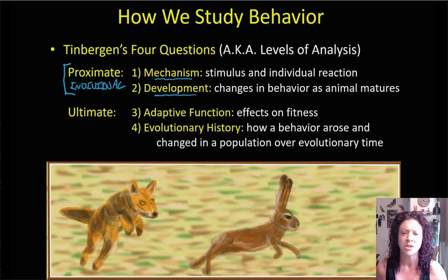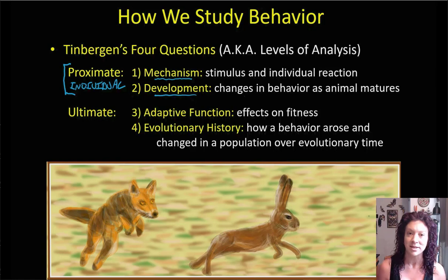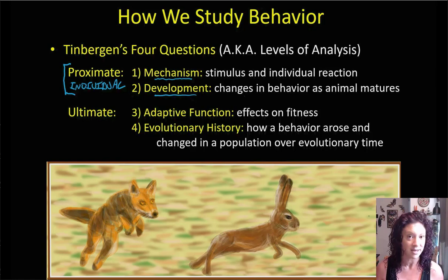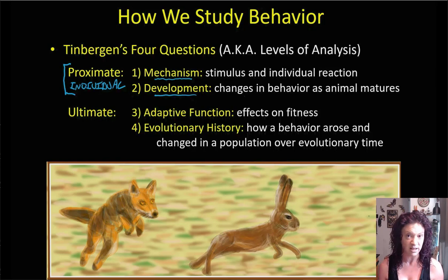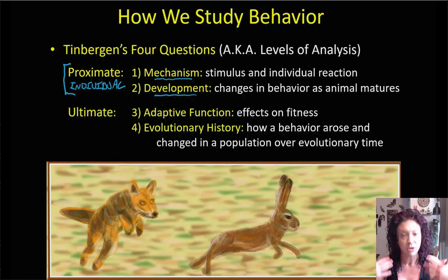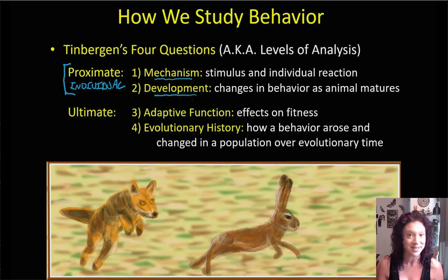Development refers to how a particular behavior can be modified as an animal matures. Rabbits will get better as they age at spotting coyotes in the wild, so they can start running away from them even faster. As the rabbit matures, its legs will get longer, its muscles will become stronger, and it will be able to flee more quickly. How does that animal's physical development contribute towards it being able to achieve this behavior of running away fast enough to survive?